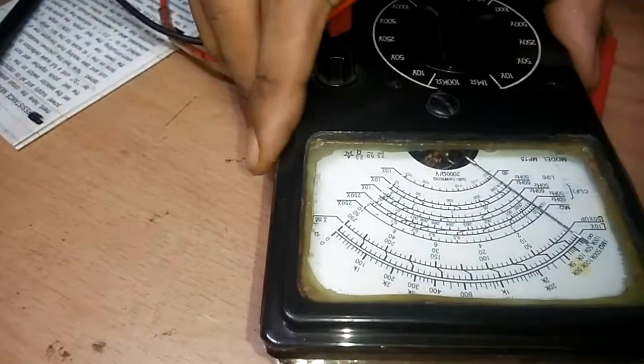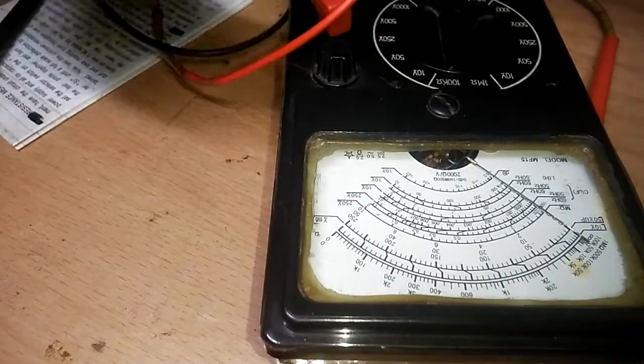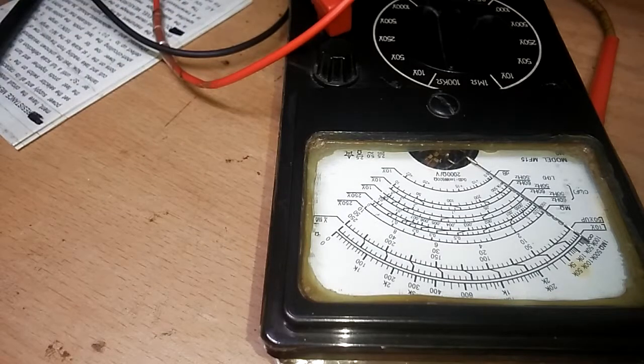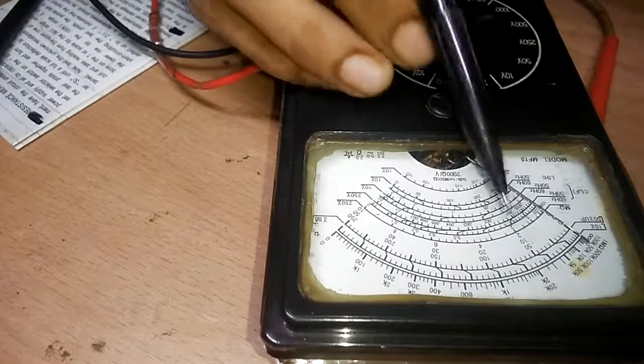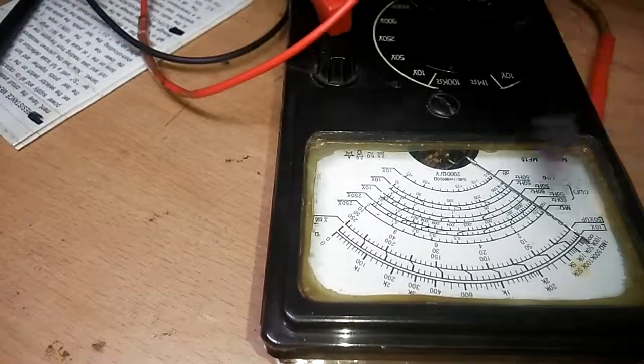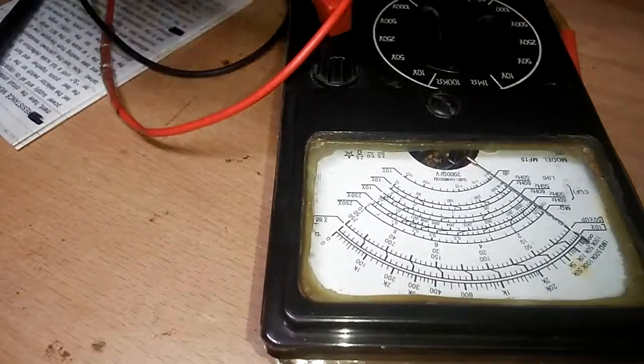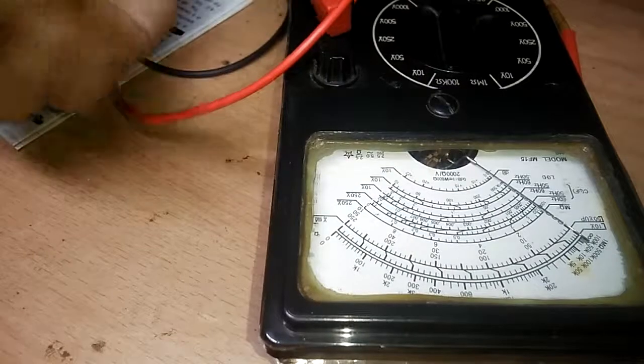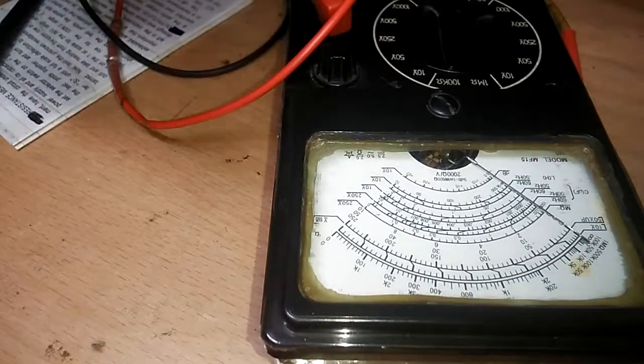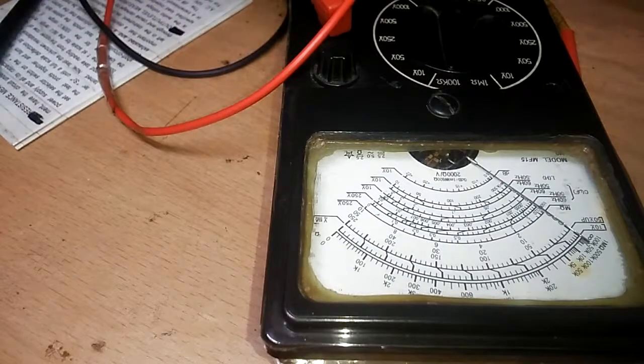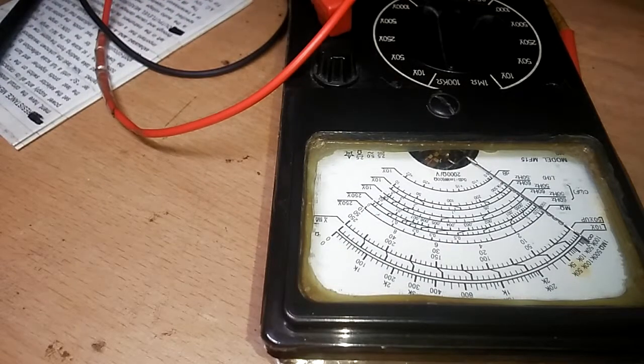The only advantage that the analog multimeter has over the digital is probably the frequency meter, where you would get to actually see the pulsing. I don't currently have the circuit to show you that. Otherwise, an analog multimeter is a pain in the ass. Don't buy analog multimeters unless you're really a fan of them.